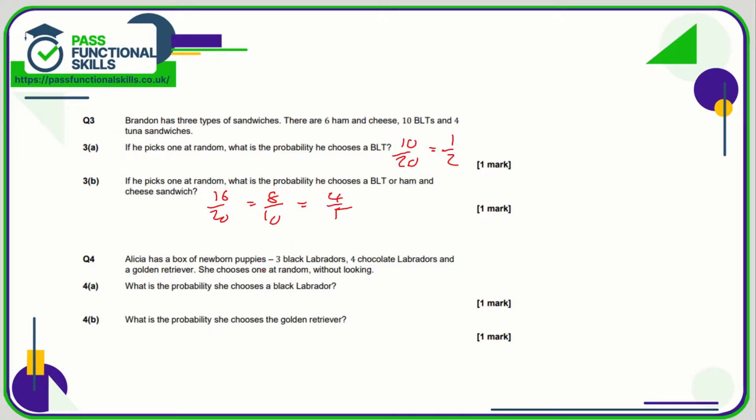Question number four: Alicia has a box of newborn puppies. What's the probability she chooses a black Labrador? Well, in total we're talking about three, seven, eight. So of the eight, how many are black Labradors? Three.